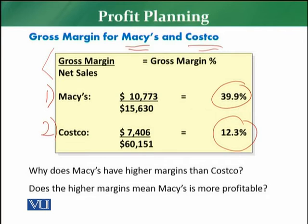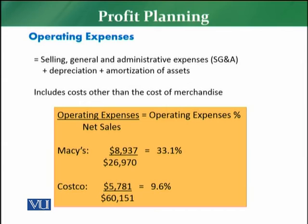But is that really the case? This is only the first part — gross margin — and expenses have not yet been subtracted. From this picture it appears that Costco is less profitable and Mackey's is more profitable. But we still need to examine whether profitability truly maintains in this way, and we will continue this example further. We now move to the third component, which is operating expenses.